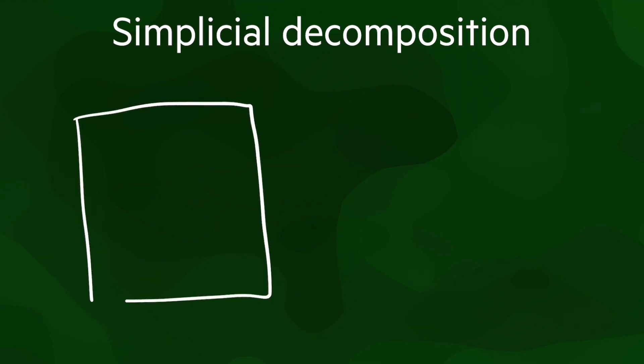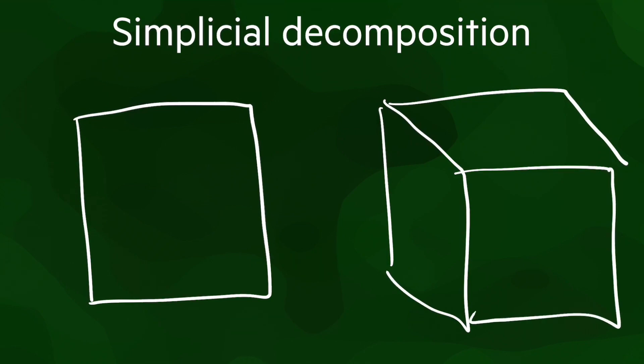Finally, a simplicial decomposition is a process that we use to split cells of a certain dimension into simplices of the same dimension. Informally, we can also just call it a triangulation, but bear in mind that it can be a triangulation in any dimension. And so in this context, a tetrahedralization is also a triangulation.